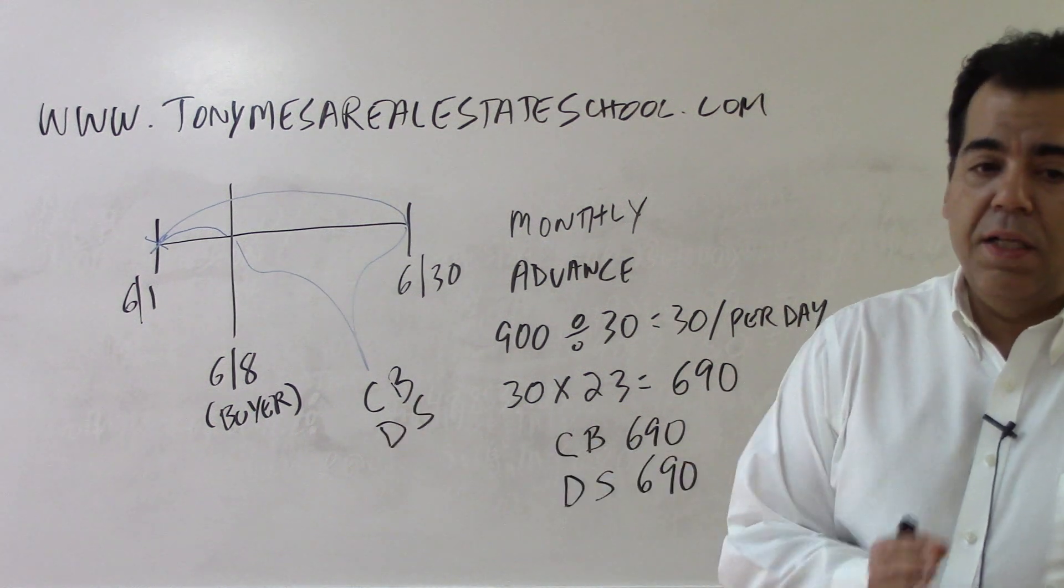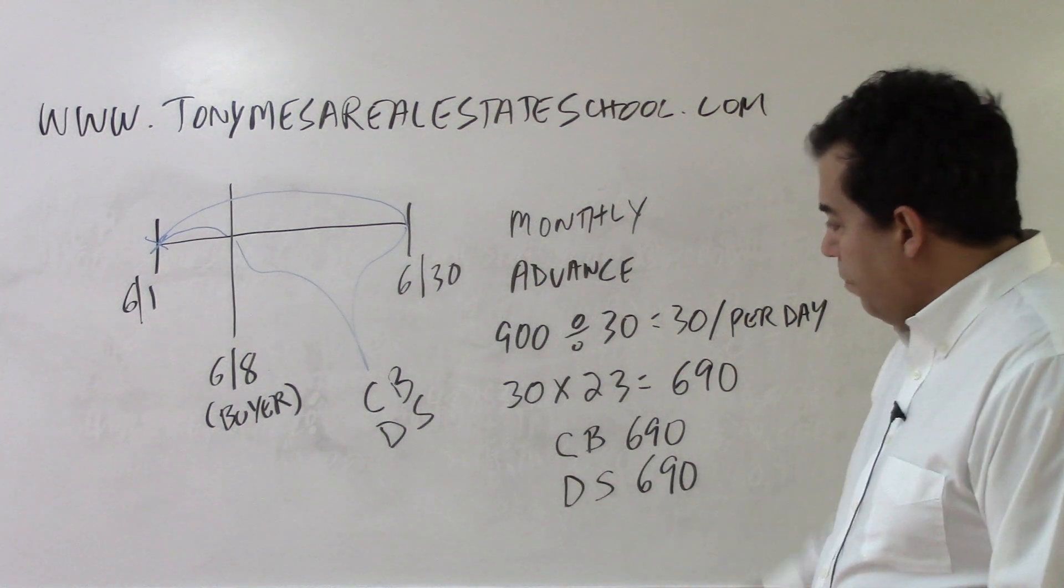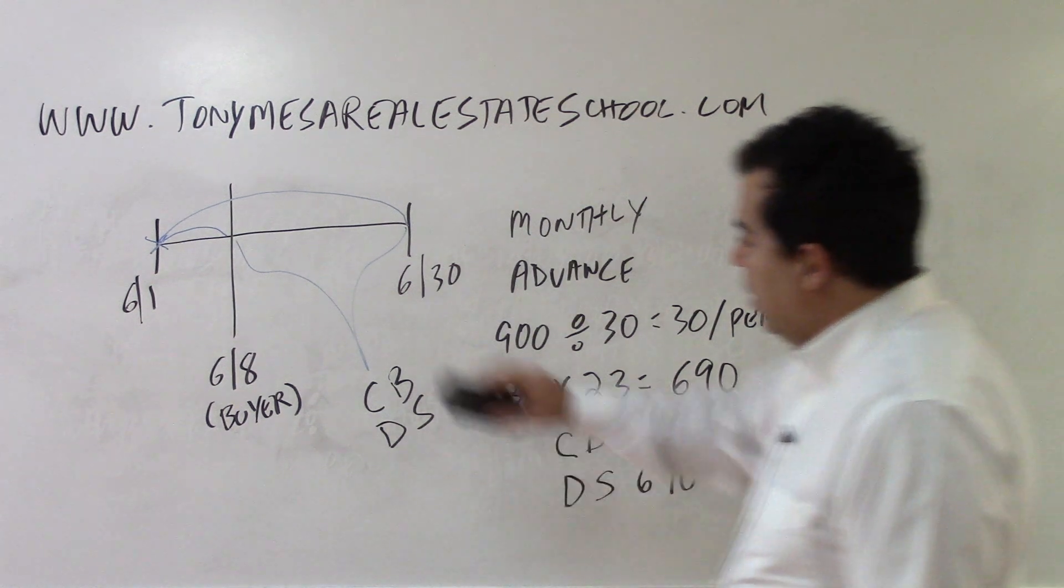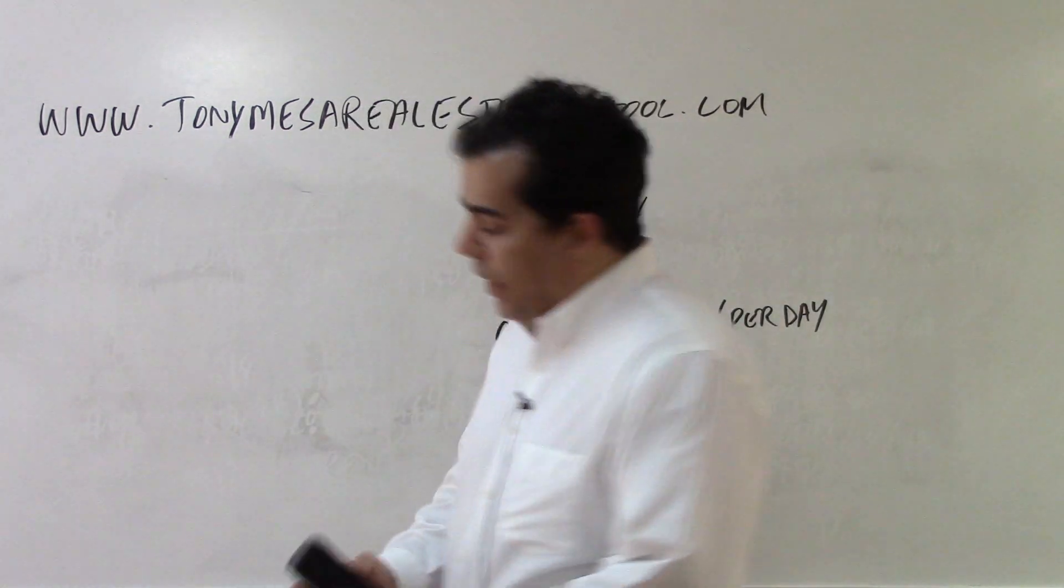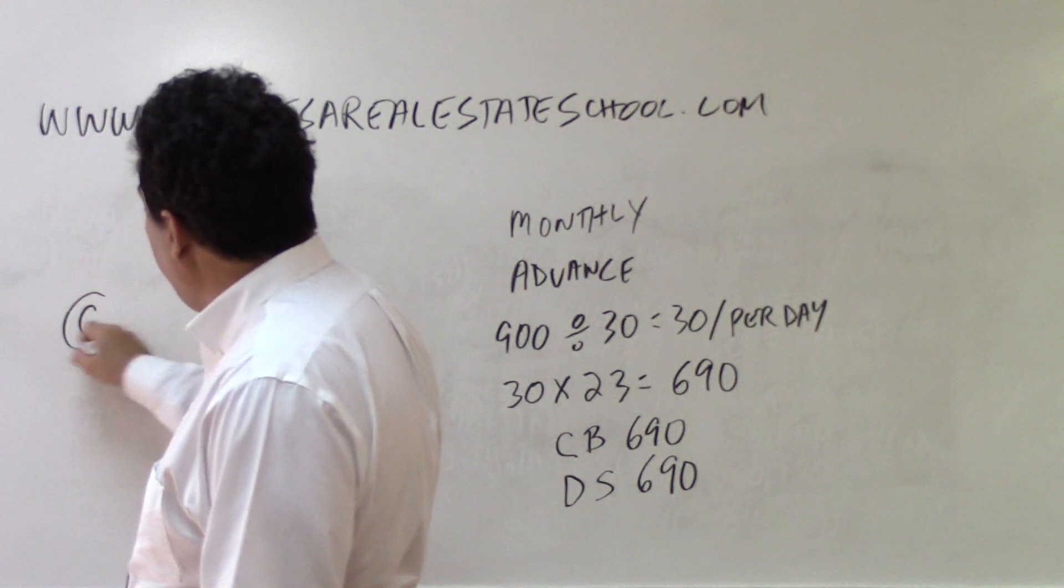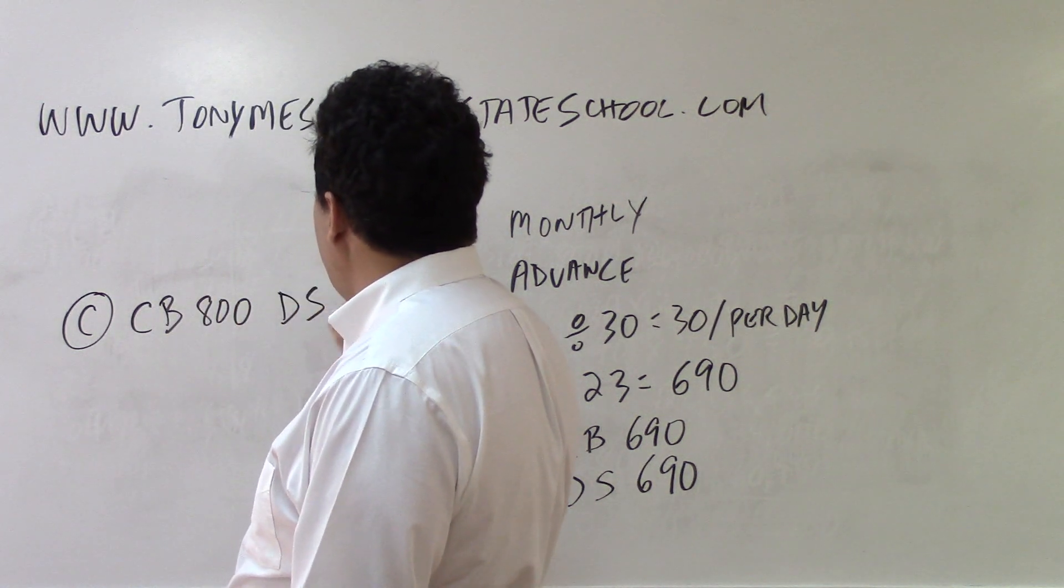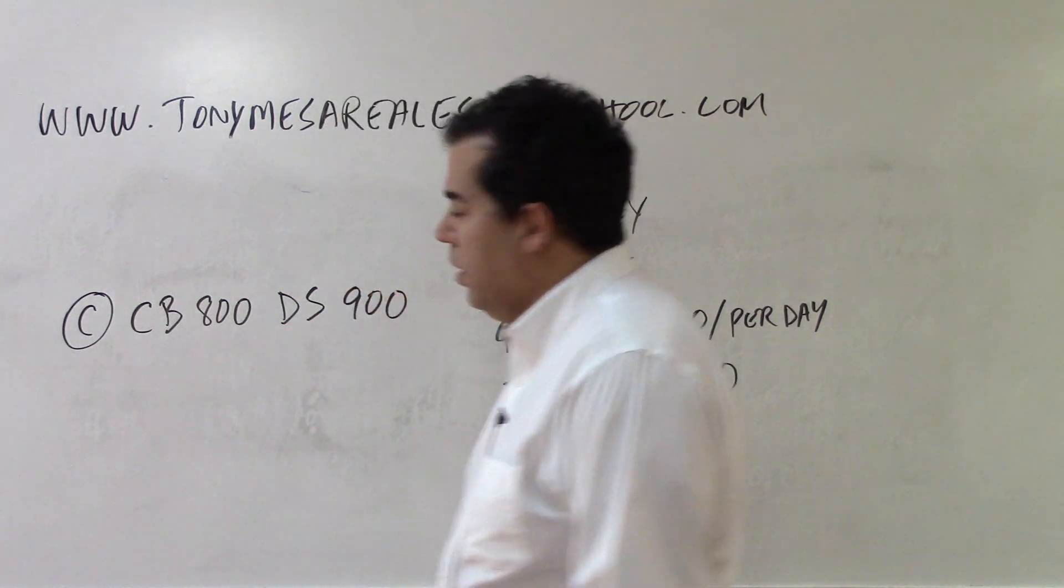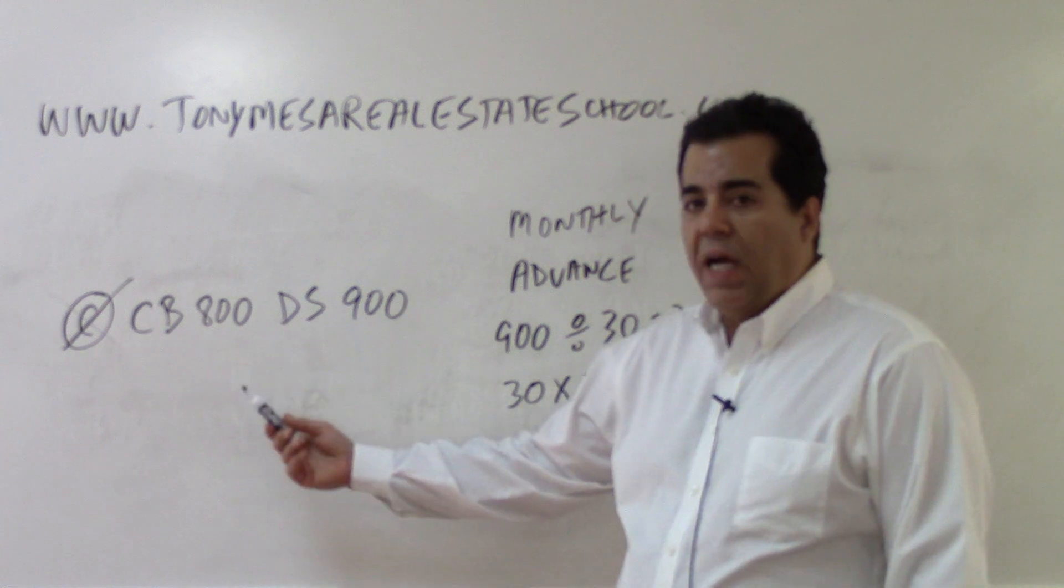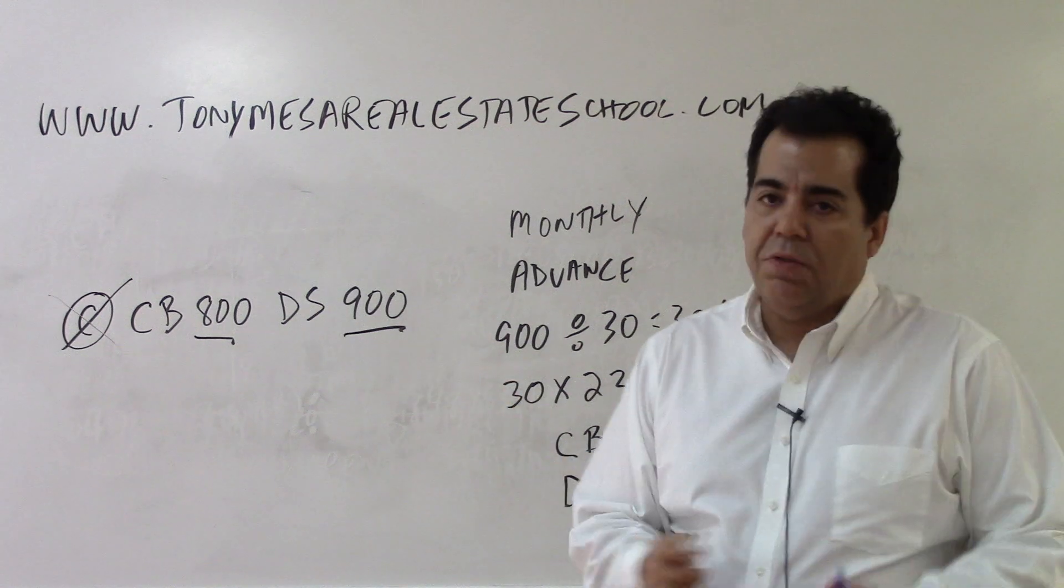And that makes sense because at the beginning of the month the seller got $900 and they're not entitled to $690 of that. Now do remember that with a proration, it's always the same number that one side gets credited and the other side gets debited. Let me show you something. You're taking the state exam and you've got answer choice C, and answer choice C says credit the buyer $800 and debit the seller $900. That right there is an incorrect answer choice. You don't even have to think about it because it's two different numbers. It's always got to be the same identical number that one side is credited, the other side is debited.